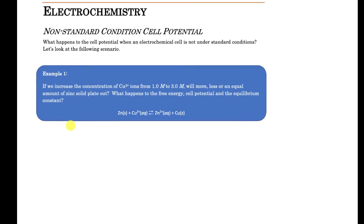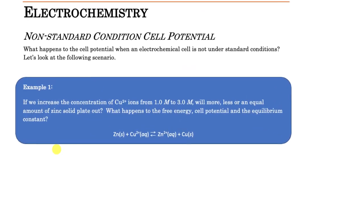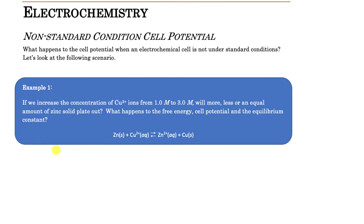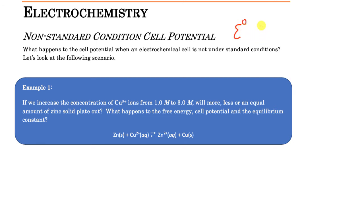Next we're going to look at what happens when we're not at standard conditions. Standard conditions are when we're at 1 molar concentration for solutions and 1 atm for pressures. We're going to look at what happens when we change those concentrations. I'll take the same example but reverse the reaction to make it thermodynamically favorable, and I'm changing the concentration of the copper 2 plus ions from 1 molar — standard conditions — to 3 molar, which is now non-standard conditions. The degree symbol indicates standard conditions; without it, we're under non-standard conditions.